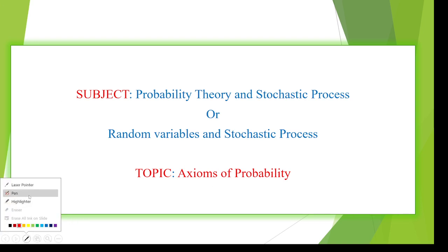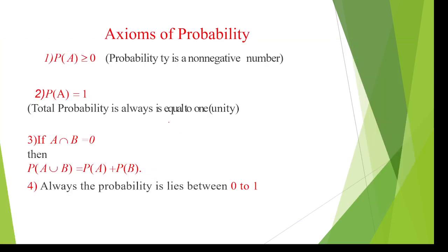I am going to discuss the axioms of probability. There are four axioms. The first axiom is that probability is always greater than or equal to zero — it is a non-negative function. If A is an event, then the probability of A is always greater than or equal to zero. The second axiom is that the maximum probability of an event is always equal to one.